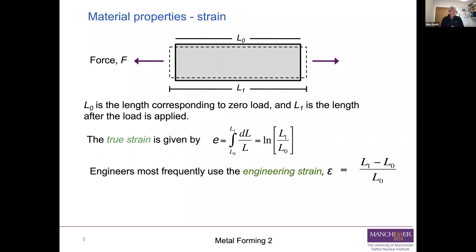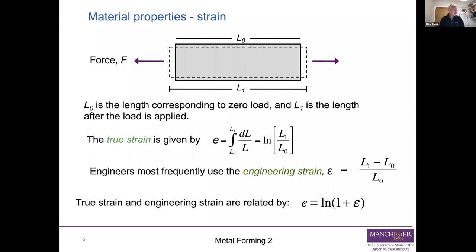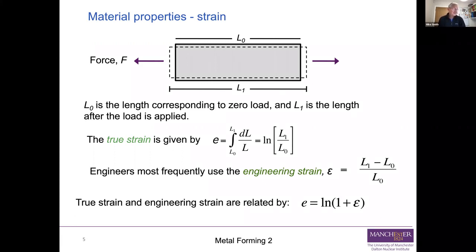Engineers usually use a simpler definition: the engineering strain ε, defined as the final length minus the original length divided by the original length. Both measures are dimensionless. True strain and engineering strain are related: substituting the engineering strain expression into the true strain formula gives true strain = ln(1 + ε). They are not the same. At very small strains they are very close, but at large strains they differ significantly.